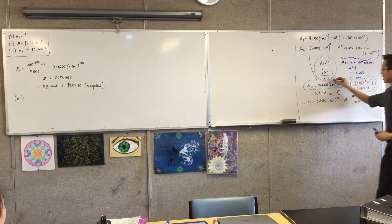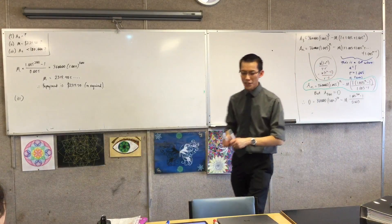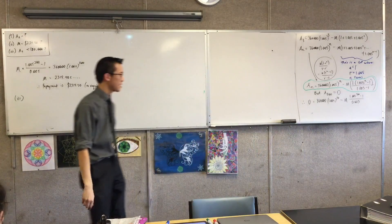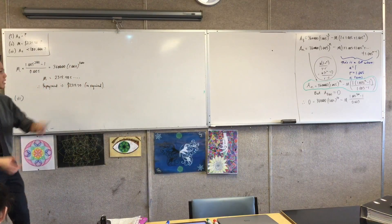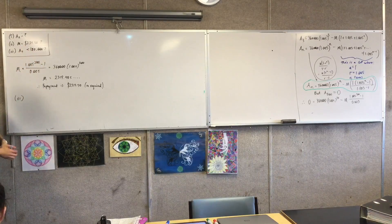Here is the amount owing after an repayment, right? And what I want that to be is less than $180,000, okay?